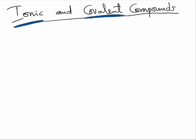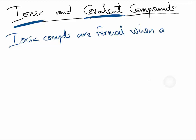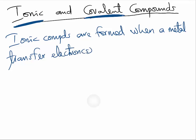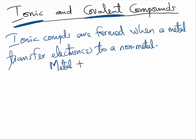How are ionic compounds made? Ionic compounds are formed when a metal transfers an electron or electrons to a non-metal. So you have a metal and at least a non-metal when you're talking about ionic.